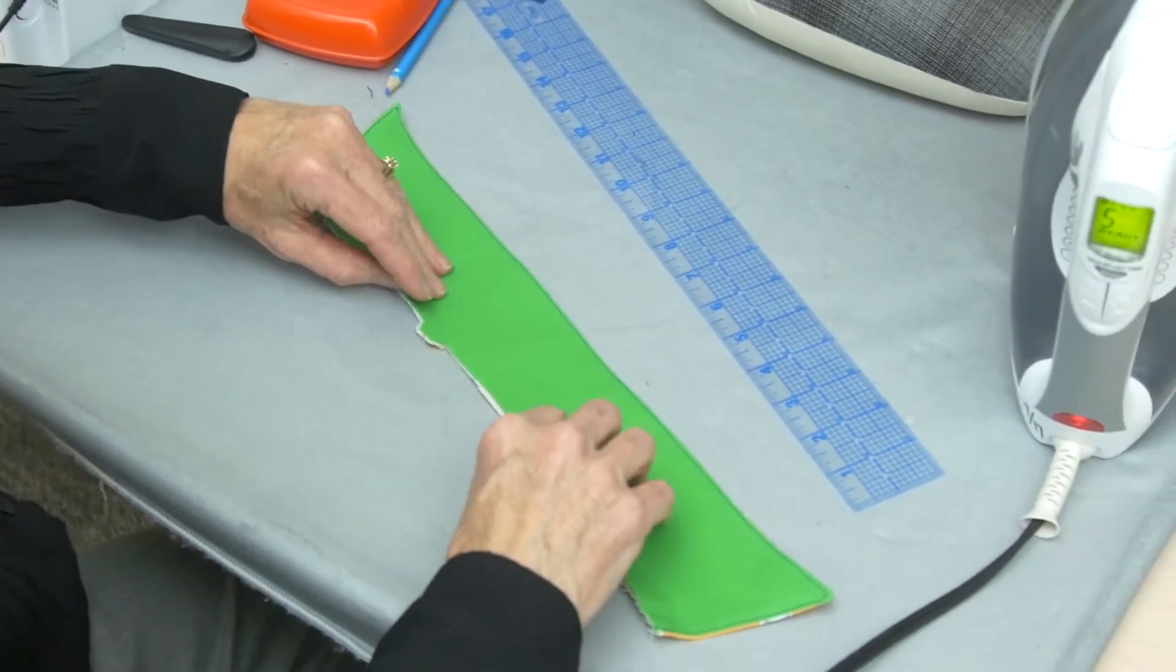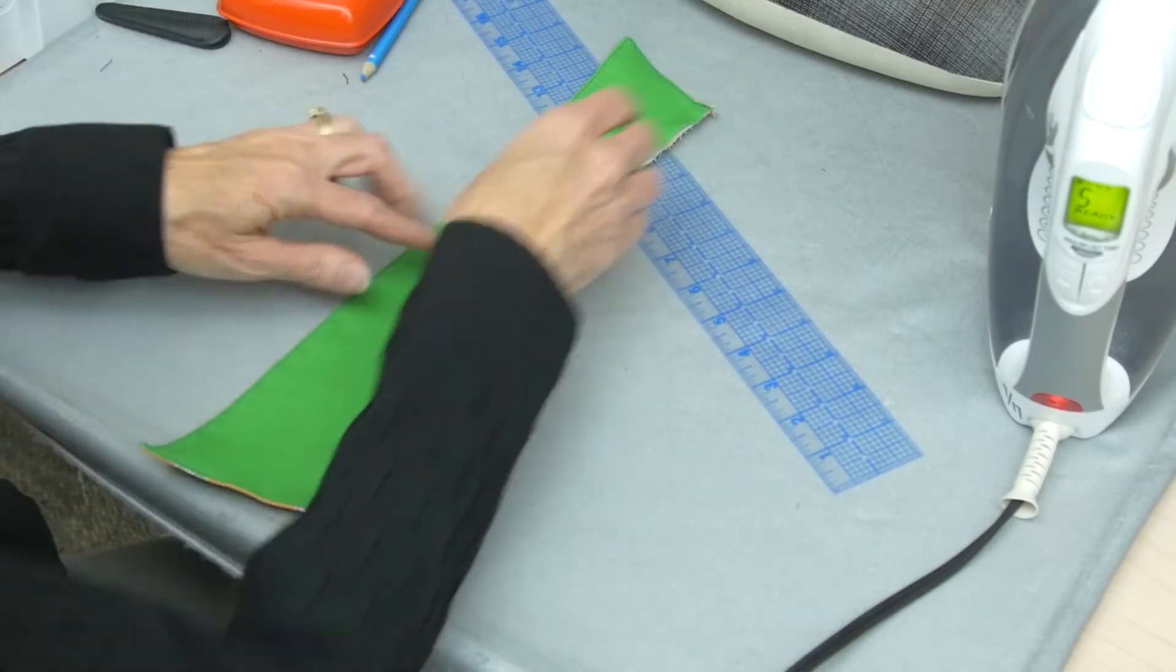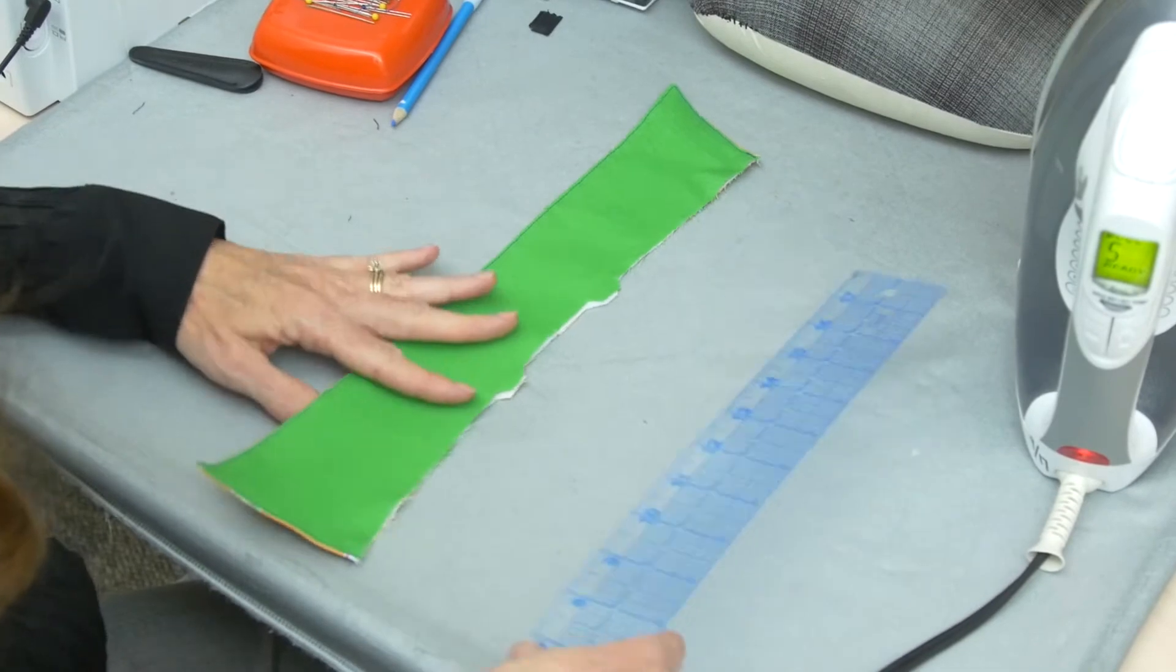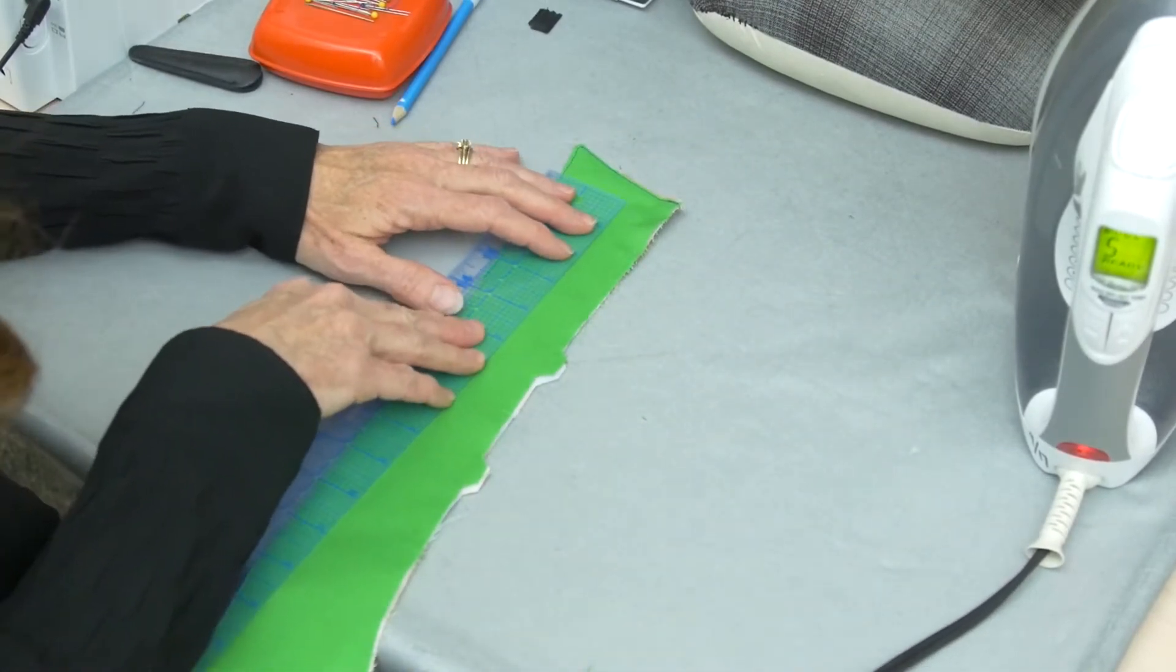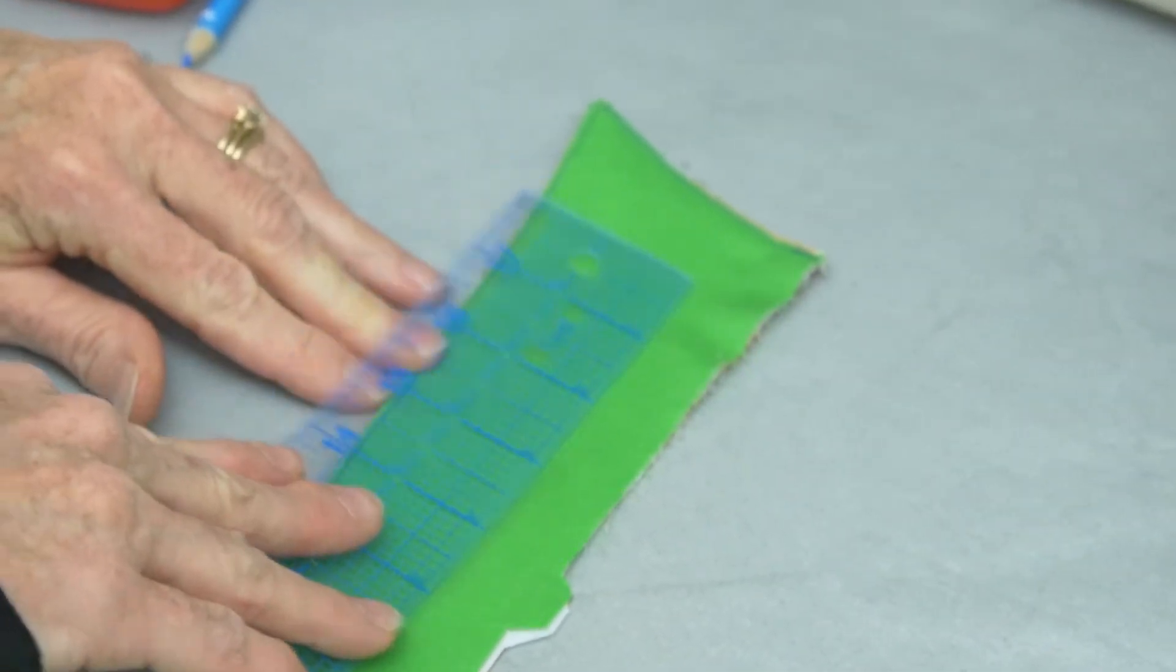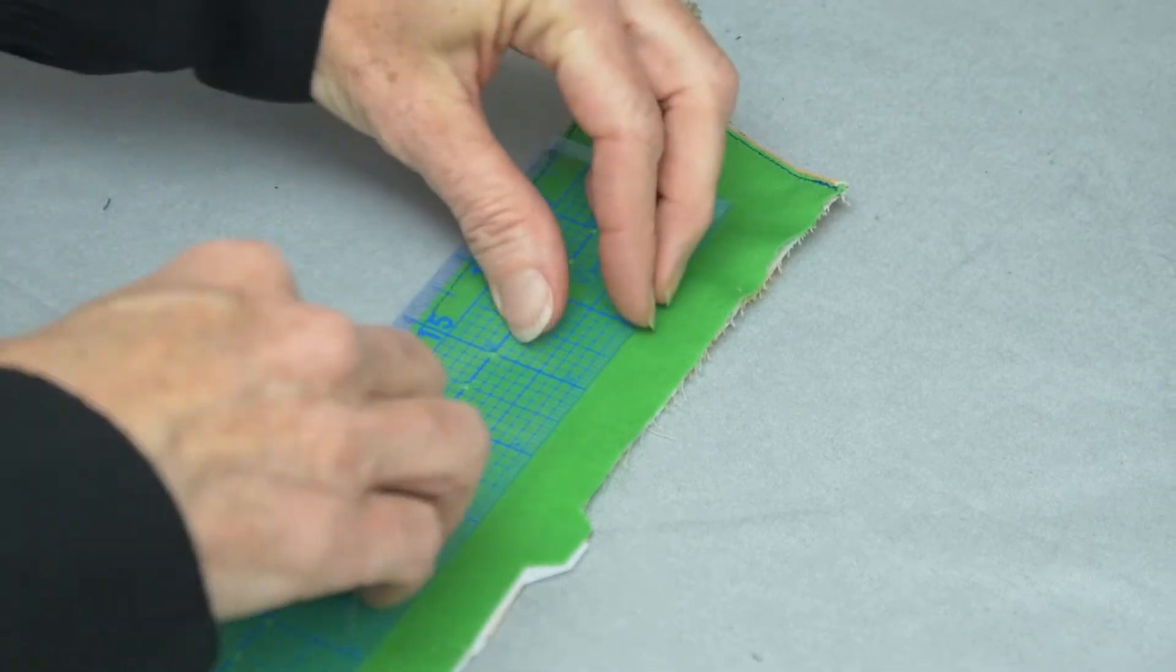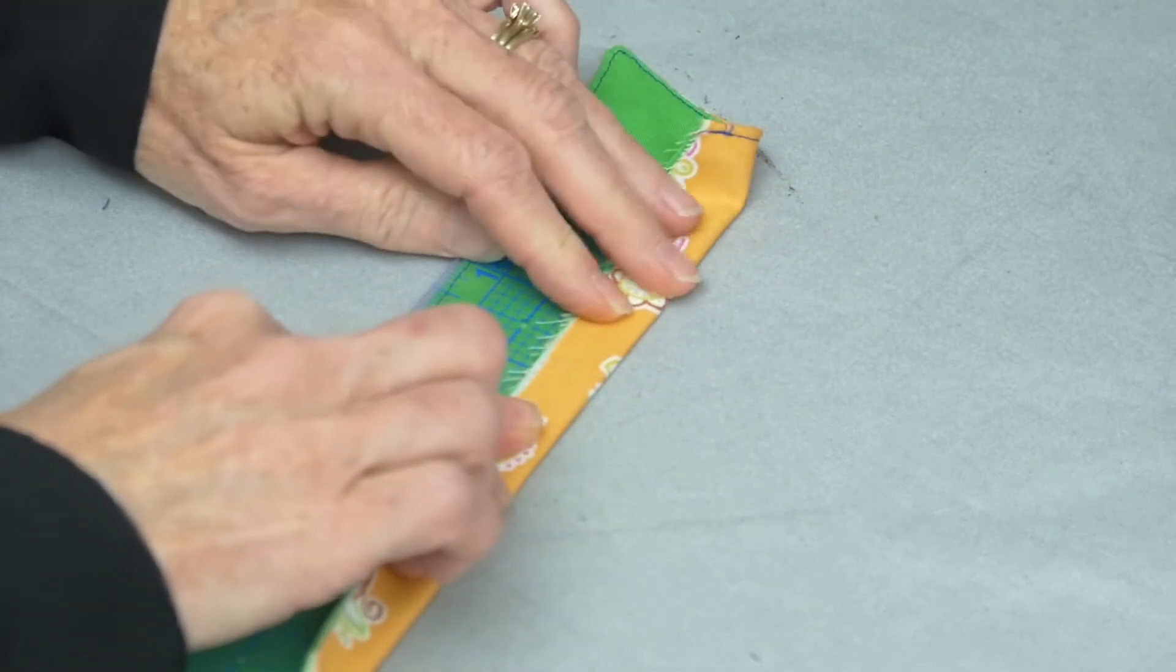Lay your collar so the collar side is down. Mine's easy to tell because my collar side is orange and my under collar is green. Take a ruler, squeeze it over towards the edge, and take your seam allowance of the fabric and fold it back over the ruler.